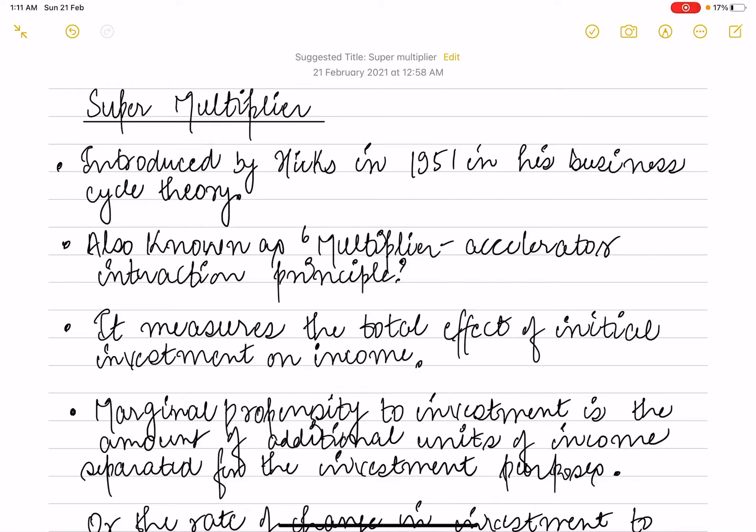Hello everyone, welcome to Economics by Vishan Arpita. In today's video lecture, we'll be studying the super multiplier. Super multiplier was introduced by Hicks in 1951 in his business cycle theory as a multiplier-accelerator interaction principle.